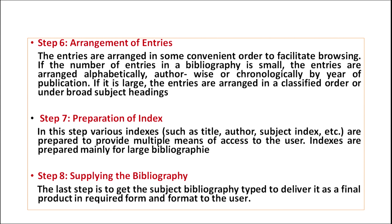Step six is arrangement of entries. The entries are arranged in some convenient order to facilitate browsing. If the number of entries in a bibliography is small, entries are arranged alphabetically author-wise or chronologically by year of publication. If it is large, entries are arranged in a classified order or under broad subject headings. Step seven is preparation of an index: various indexes such as title, author, and subject are created to provide multiple means of access for users. Indexes are prepared mainly for large bibliographies. The last step is supply of bibliography — getting the subject bibliographies typed and delivering the final product in the required form and format to the user.